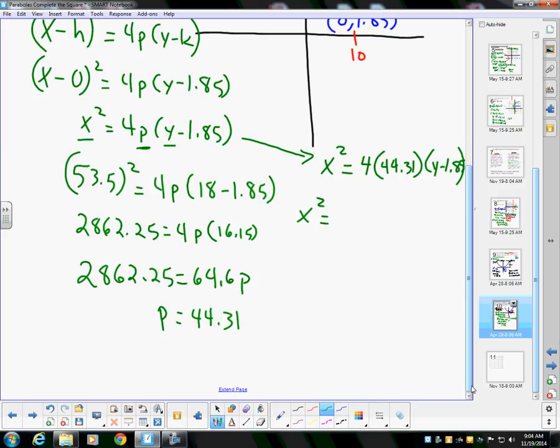44.31 times (y - 1.85). Okay, so here's what I have then. Here's my equation: x² = 177.24(y - 1.85).